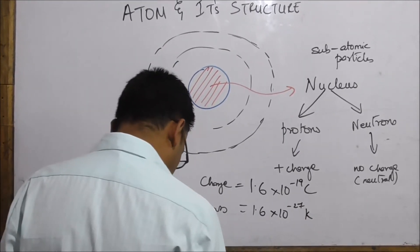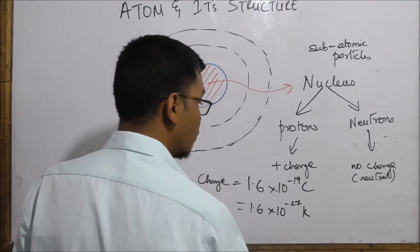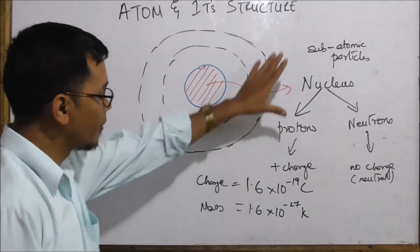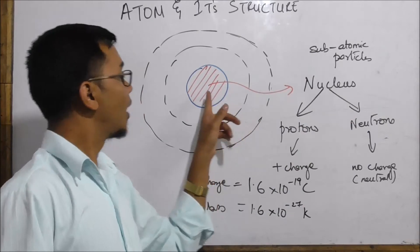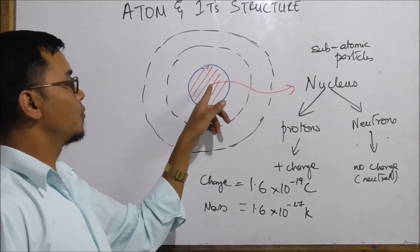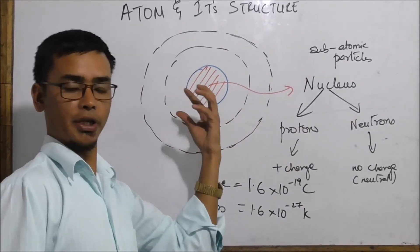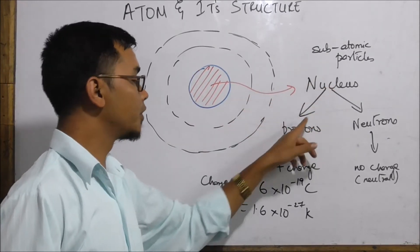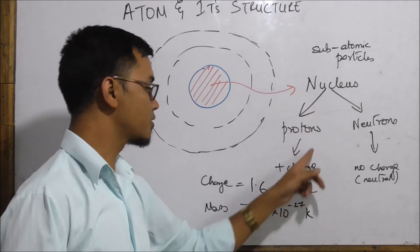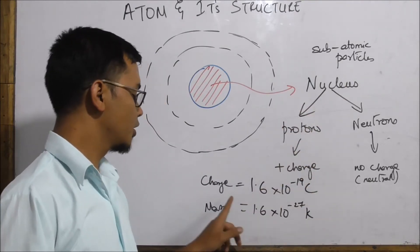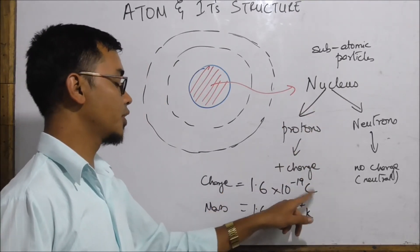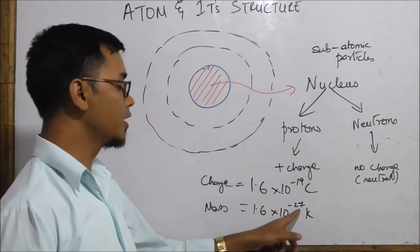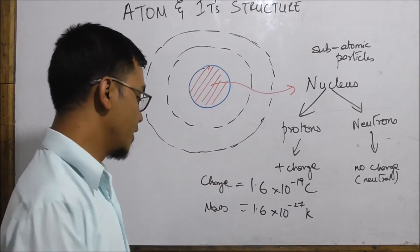Neutrons have no charge — they are neutral. The proton has a positive charge of 1.6 × 10⁻¹⁹ coulombs and a mass of 1.67 × 10⁻²⁷ kg. The nucleus contains protons and neutrons.